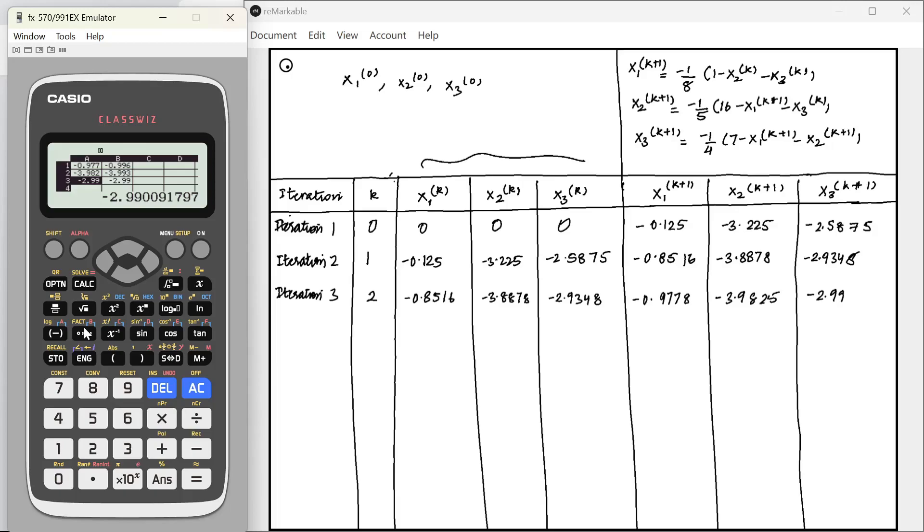Now let's go to iteration 4. Minus 0.97778, minus 3.9925, minus 2.99. Following the same process again, alpha B1, alpha B2, alpha B3.